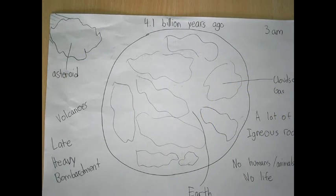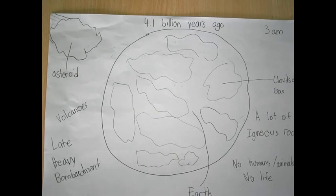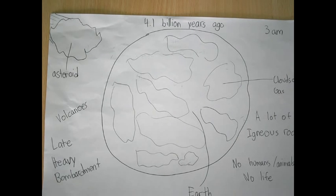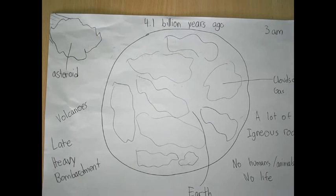There was no life on Earth. 4.1 billion years ago, at 3 a.m. in the morning, Earth was still not very neatly formed. There were igneous rocks and no life yet. During that time, it was the start of the late heavy bombardment, when there were asteroids hitting the Earth.